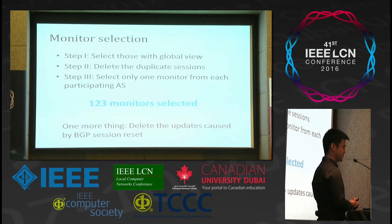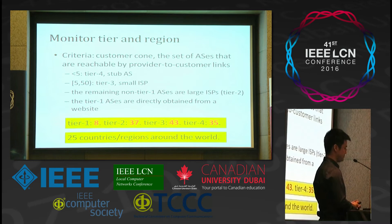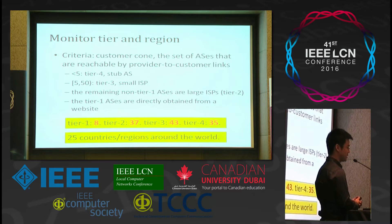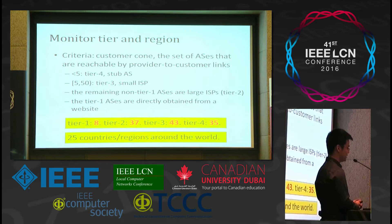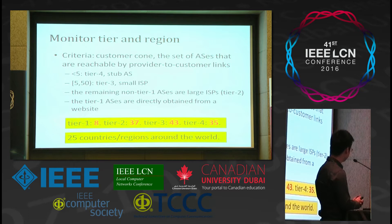There is one more step: deleting updates caused by BGP session resets, because this action causes a large number of updates that convey very little information. We categorize monitors into tiers based on customer cone — the set of ASes reachable by provider-to-customer links. If the cone size is smaller than 5, it is tier 4 (stub AS). If between 5 and 50, it is tier 3 (small ISP). The remaining non-tier-1 ASes are large ISPs. Tier 1 ASes are obtained from an external website. The ASes are distributed among all four tiers and 25 countries or regions around the world, making our measurement layout very solid.